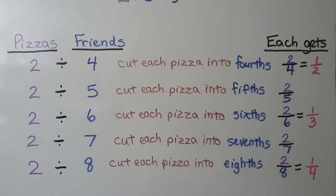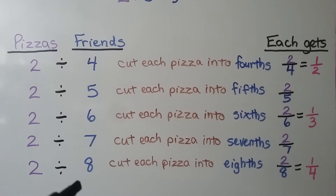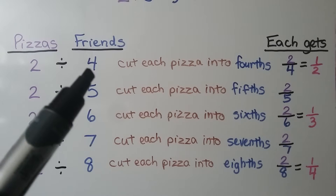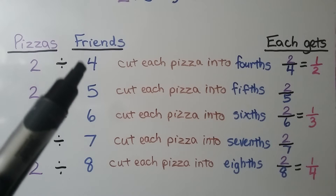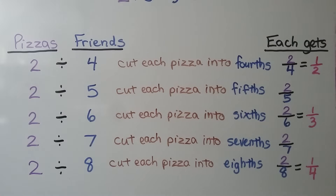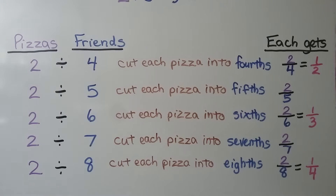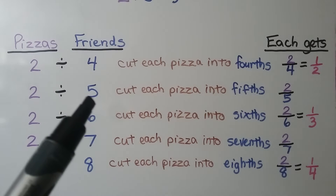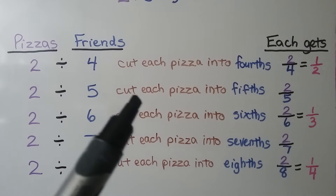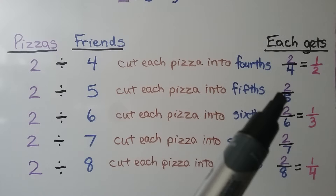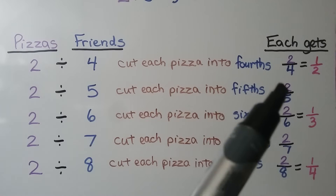Look at the pattern of what is happening here. We're going to keep 2 pizzas every time but increase the number of friends. If there are 2 pizzas divided by 4 friends, then each pizza is cut into 4ths, and they'll each get 2 fourths, which simplifies to 1 half. If there are 2 pizzas and 5 friends, each pizza is cut into 5ths, and they each get a 5th from each pizza — they get 2 fifths.